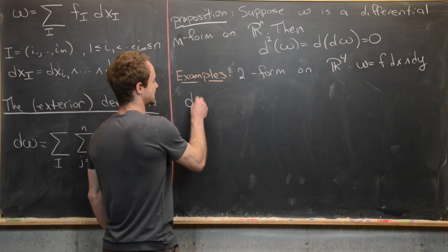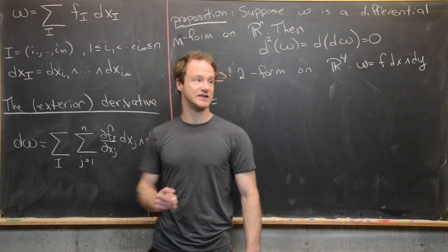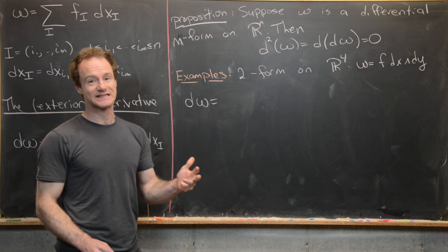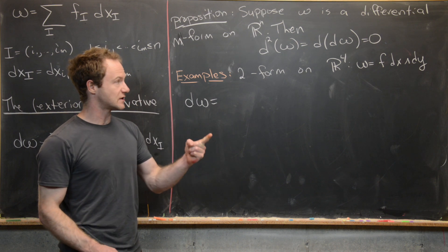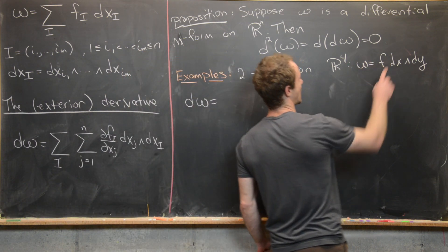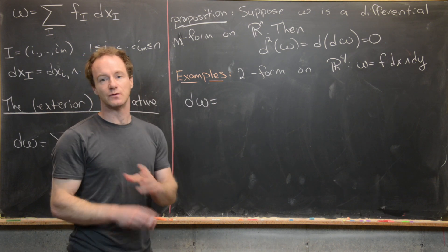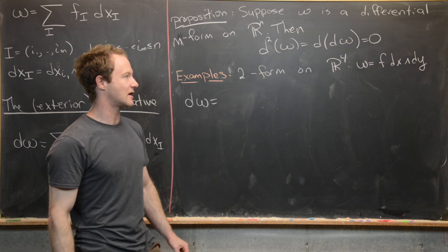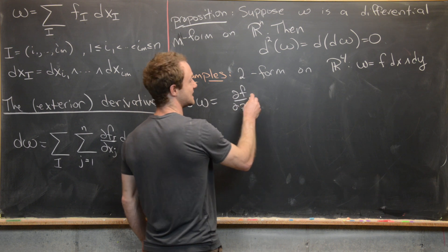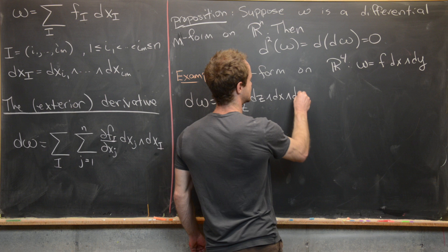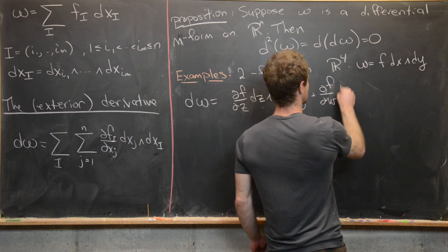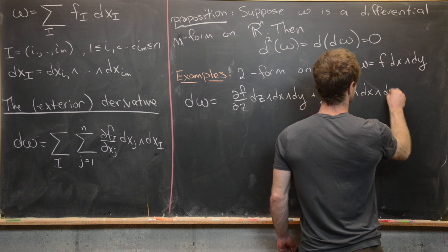Let's calculate d omega using the definition. We work through partials with respect to x, y, z, and w. However, we can save time: the partial with respect to x would introduce dx wedge dx, and the partial with respect to y would introduce dy wedge dy — both zero. So we only need the partials with respect to z and w. That gives us: the partial of f with respect to z times dz wedge dx wedge dy, plus the partial of f with respect to w times dw wedge dx wedge dy.